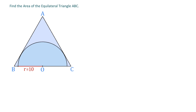First of all, in an equilateral triangle, all three sides are equal and each angle measures 60 degrees. And to find the area, first we need to find a side of this triangle. We will start by connecting the center O with this point of tangency and let's call it point D. Because the radius is always perpendicular to the tangent at the point of tangency, this angle is a right angle.